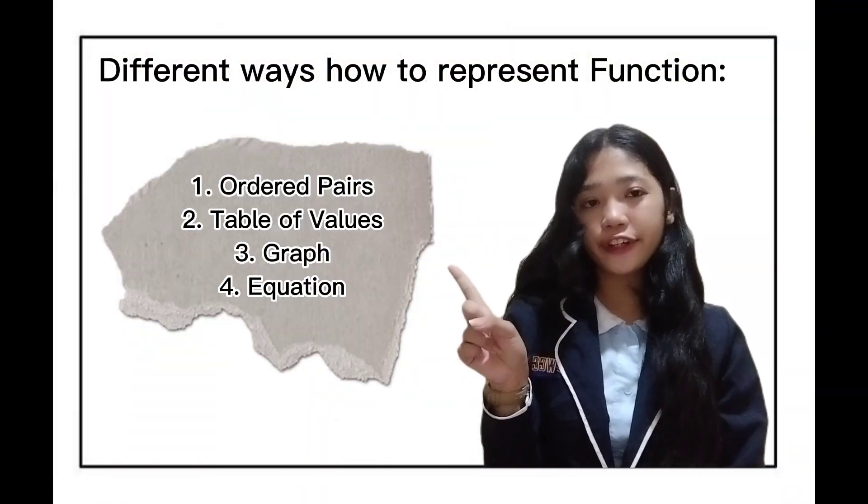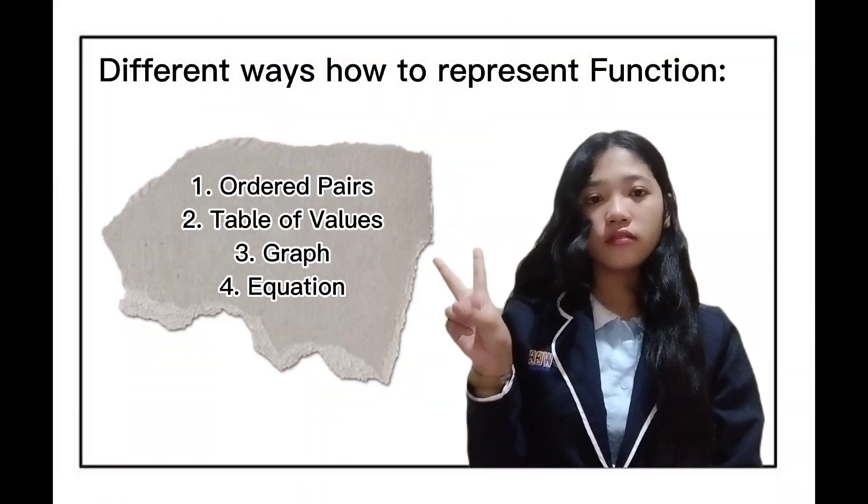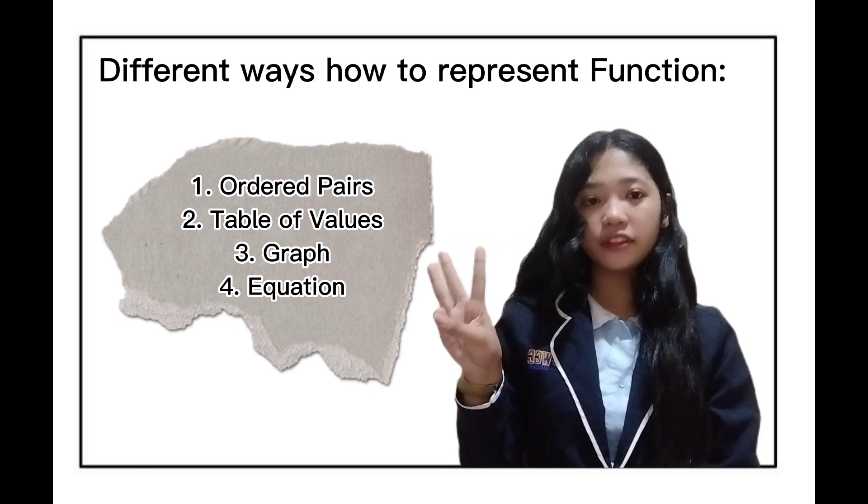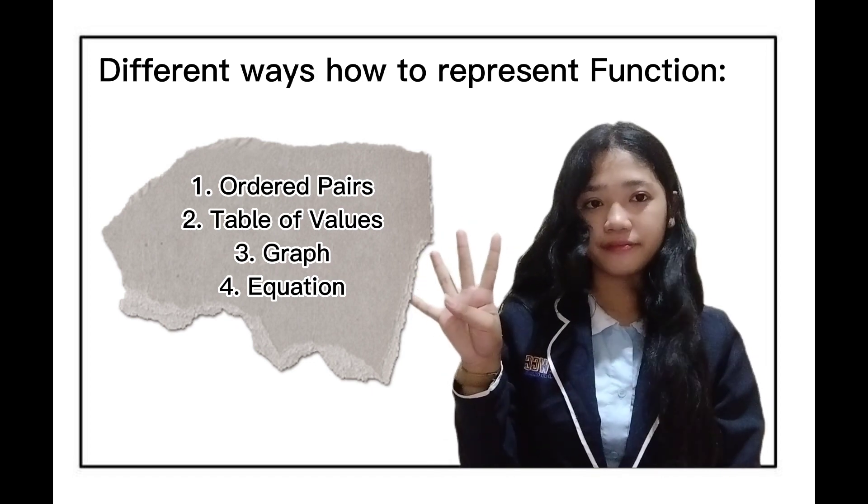First is ordered pairs, second is table of values, third is graph, and fourth is equation. Now, let's start to identify our domain and range.